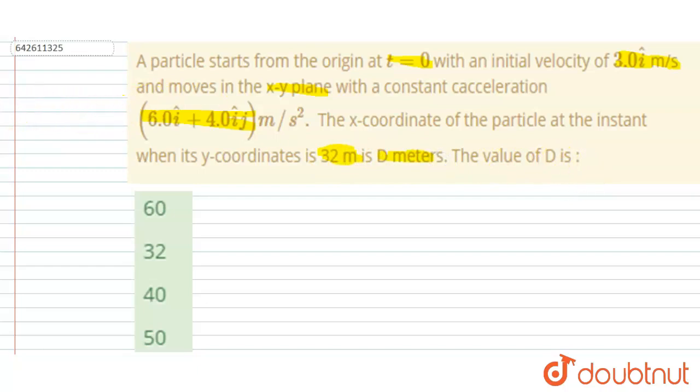So here it is given that the initial velocity is this and acceleration is this. So if I talk separately about x and y-coordinate velocity and acceleration, then I will write here: ux equals 3 m/s and uy equals 0, and ax, if you see here...